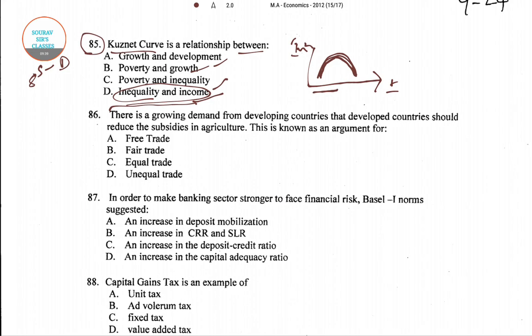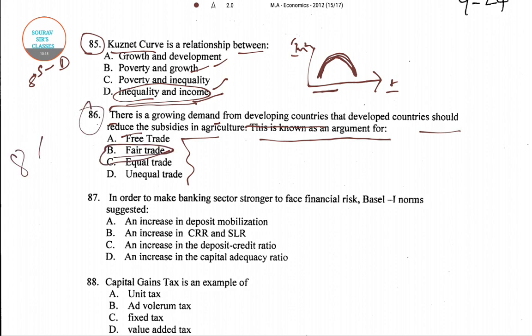Question number 86: There is a growing demand for developing countries that developed countries should reduce subsidies in agriculture. This is also known as an argument for — with four options given. Option B, which is fair trade, is the right answer. So for question number 86, the right answer is option B — fair trade.